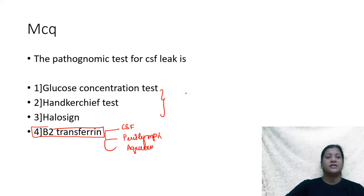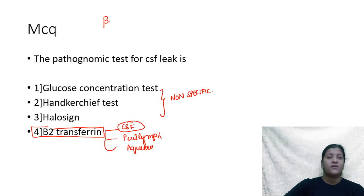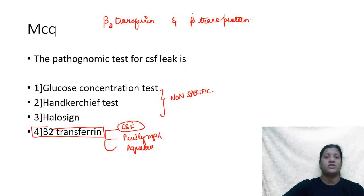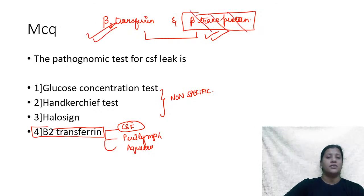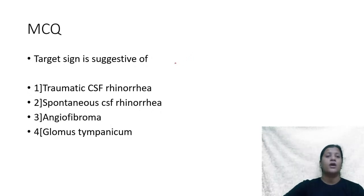Glucose, handkerchief, and halo sign tests can identify CSF rhinorrhea but are non-specific. The specific test is beta-2 transferrin. However, if an exam question gives you a choice between beta-2 transferrin and beta trace protein, mark beta trace protein — because beta trace protein is not found in perilymph or aqueous humor, it is present only in CSF. If beta trace protein is not an option, then mark beta-2 transferrin.